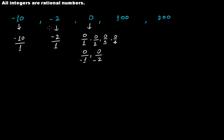In all these cases, if you want to write 100 as a rational number, this is 100 over 1. So this is a rational number. Even in this case, 200 divided by 1 — if you divide this by 1 you get back 200 only.